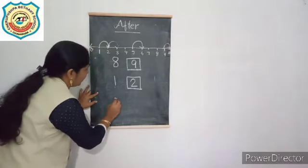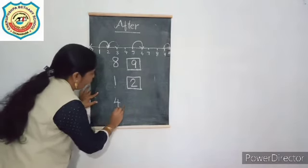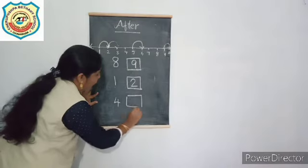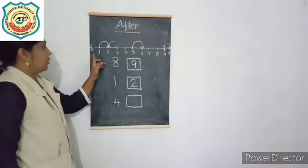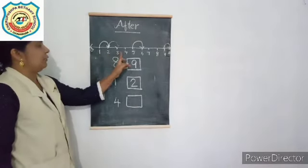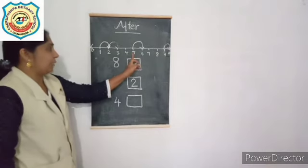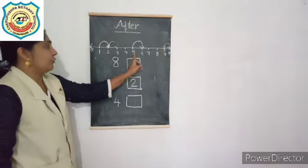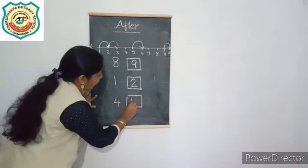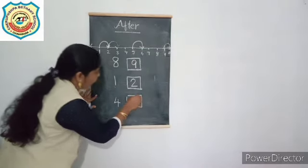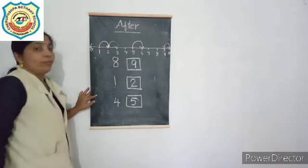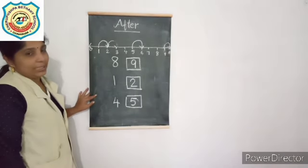What comes after 4? 0, 1, 2, 3, 4, 5. After 4 we can see 5 in this number line. The next number is 5. Okay children.